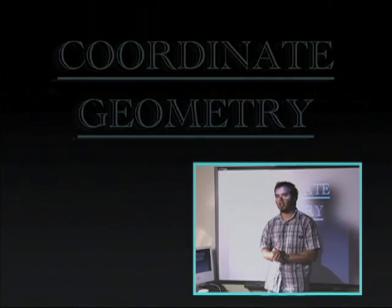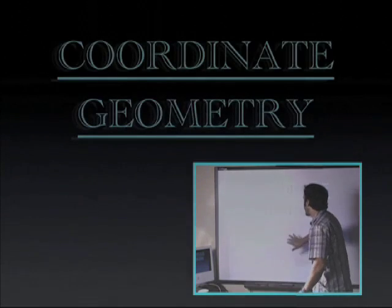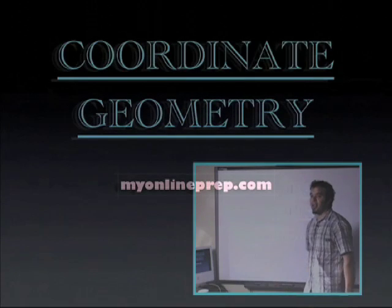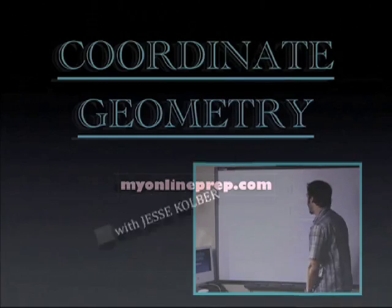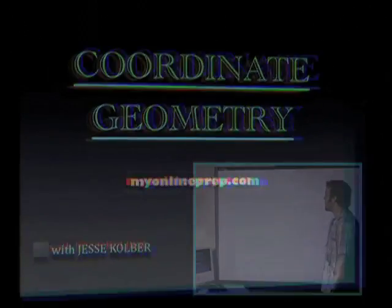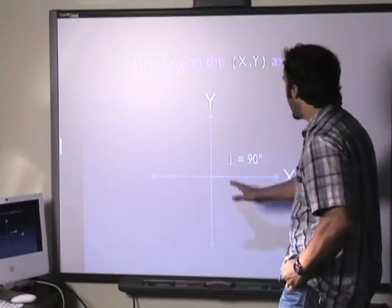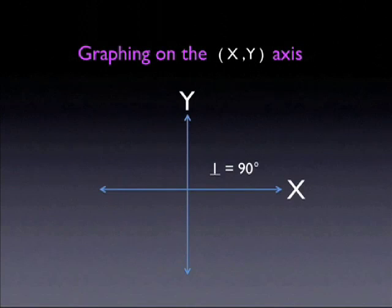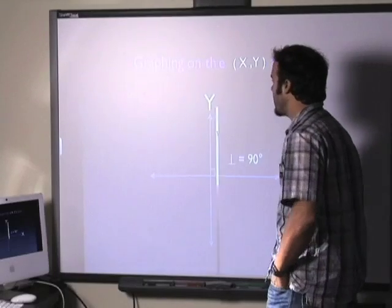Today's lesson will be about coordinate geometry. Our company is MyOnlinePrep.com and my name is Jesse Kolber. With coordinate geometry we have the x-y axis. We know that the x-y axis both meet each other at 90 degrees. This symbol here represents perpendicular, we know it's 90 degrees. The x-axis is horizontal and the y-axis is vertical. Those are important basic facts to understand.